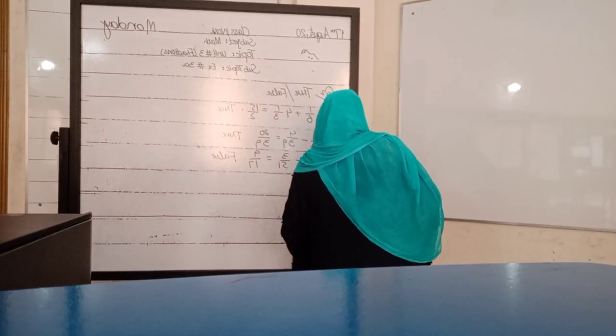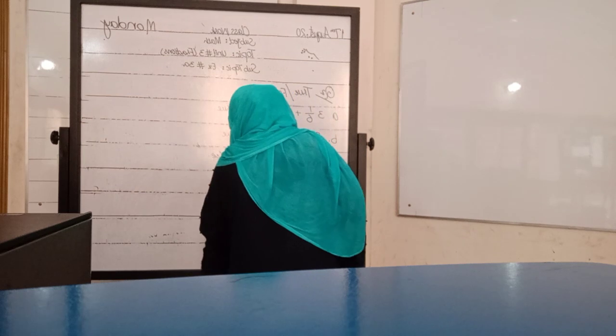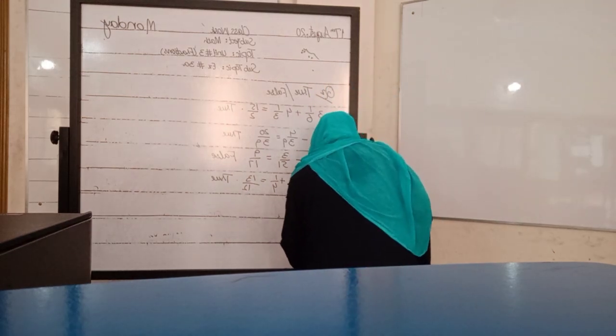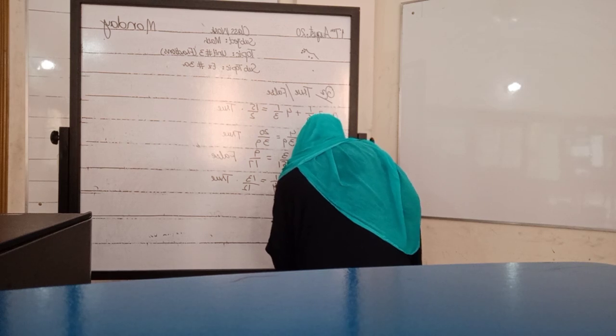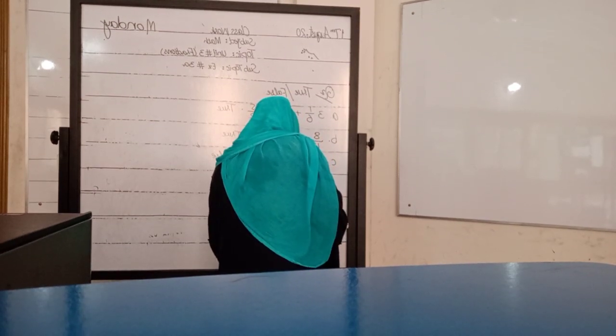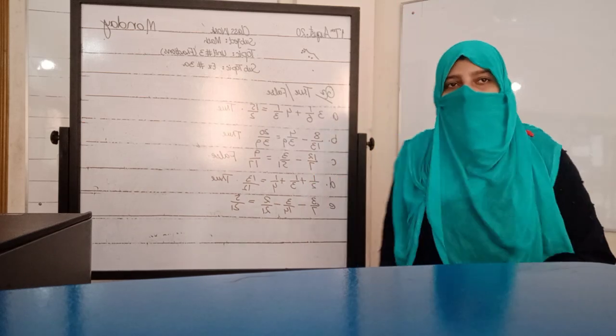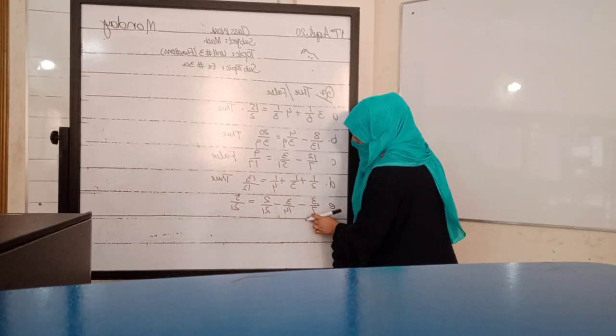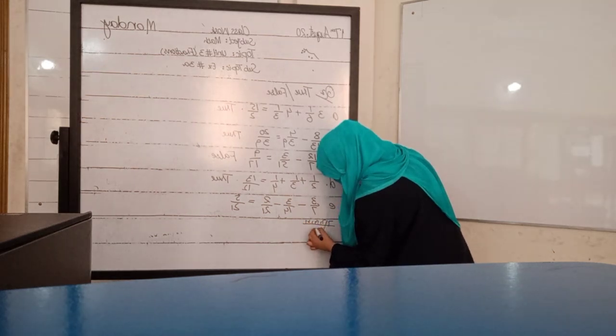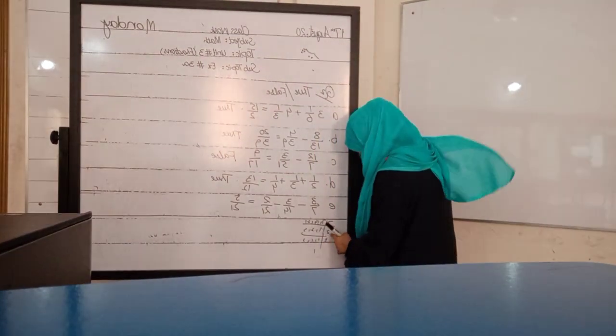D part: 1 over 2 plus 1 over 3 plus 1 over 4 equals 13 over 12. Yes, it's true. Take the LCM of denominators and add these numbers. The last one is 3 by 7 minus 3 by 14 minus 2 over 21 equals 5 over 21. Take LCM of 7, 14, and 21. LCM is 42.